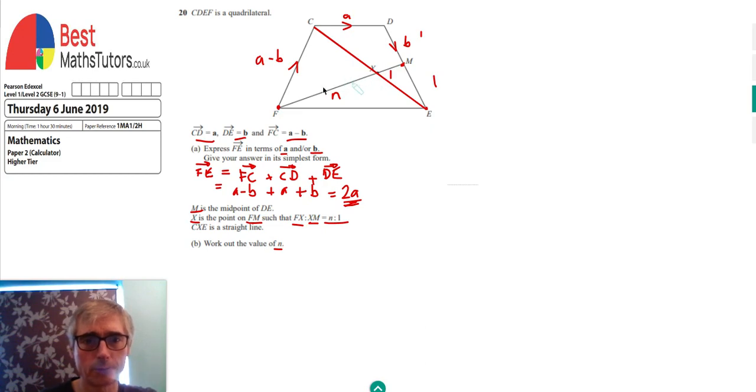The line from C to E will pass through X because it's a straight line. We've got to work out the value of N that would make that true. If N was a different value, X might be somewhere else and it wouldn't be a straight line. With that particular value of N, we're going to go straight through X, and that's the value we've got to find.